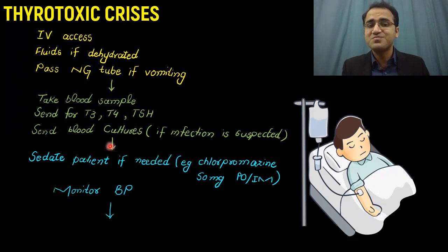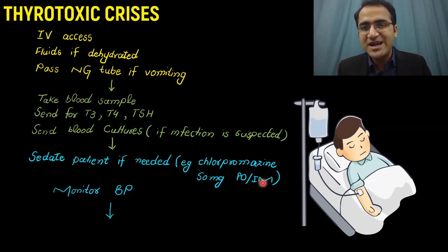If the patient is agitated, you can sedate them if needed. You can give chlorpromazine 50 mg orally or IM. When giving a sedative, you must monitor the blood pressure of the patient.